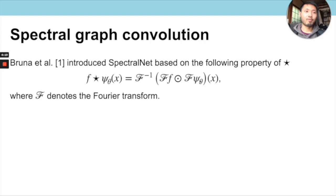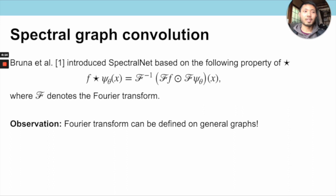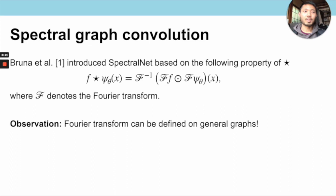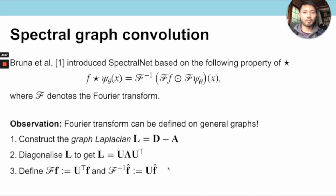This viewpoint allows us to generalize convolutions to graphs, since the notion of Fourier transforms exists on arbitrary graphs. This is done in three steps: first, construct the graph Laplacian L by subtracting the adjacency matrix from the degree matrix; second, diagonalize L to get the eigenvector matrix U and eigenvalue matrix lambda; third, define the graph Fourier transform of f as U-transpose times f, and the inverse as U times f-hat. We then define a spectral graph convolution operator by plugging these expressions into the Fourier-space convolution formula.